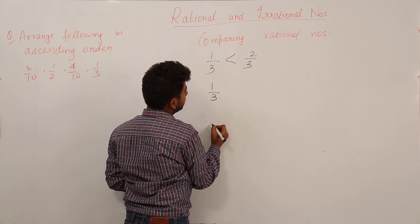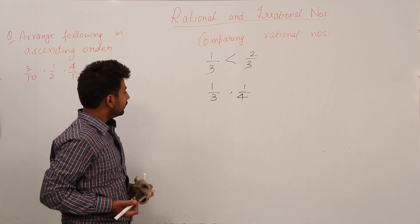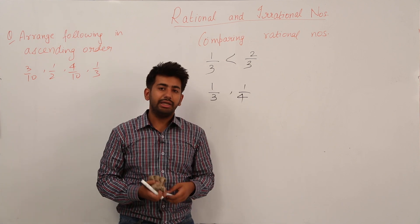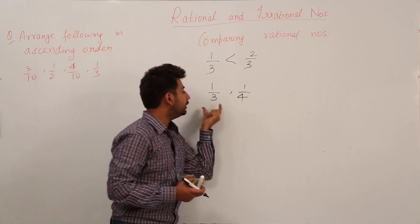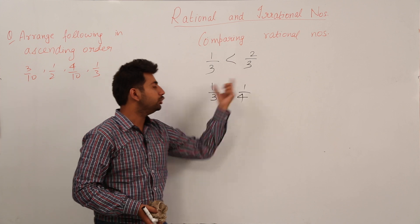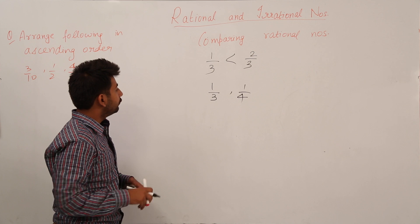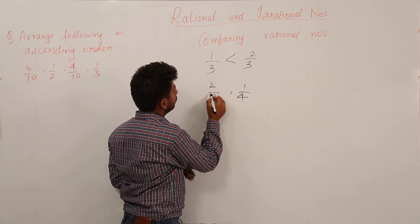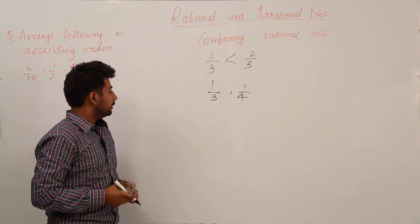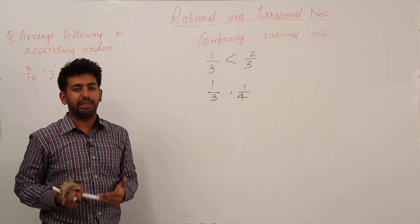Now what if we have 1/3 and 1/4? How do we compare these two rational numbers? In this particular question, both the denominators are different, so we cannot directly compare the numerators. Before we compare the numerators, we will have to make the denominators equal.